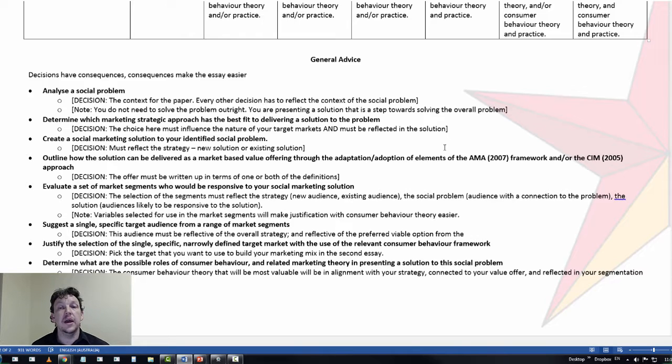And the whole way through this, the aim of this criteria is to give common structure for me so that I mark each paper with its wide range of audience choices, social problems, and social solutions. I have a common framework. I have a common understanding of what I'm looking for. But also, it's here for you to be able to say, what do I want to achieve?